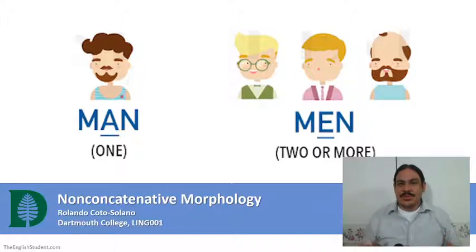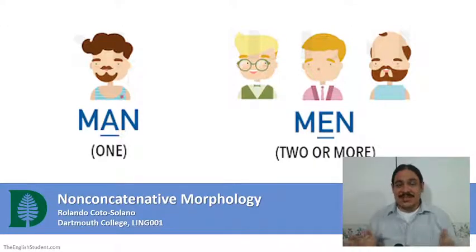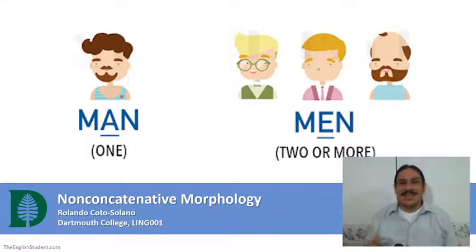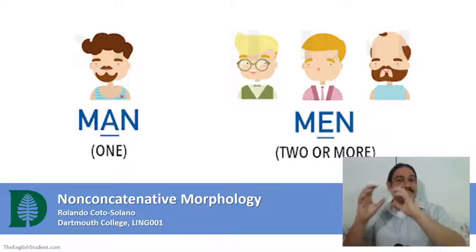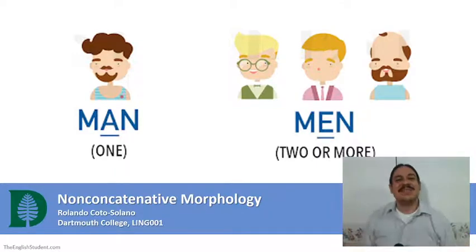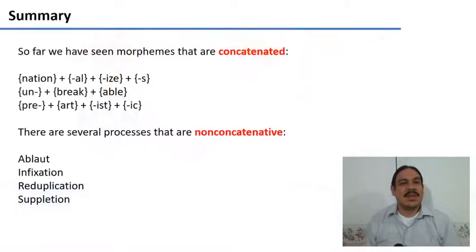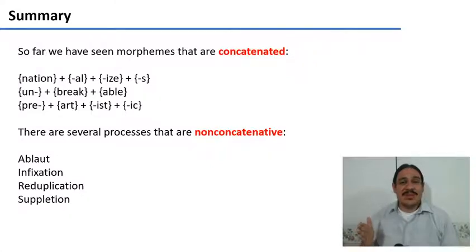In this video we're going to study a special type of morphological processes called non-concatenative morphology. They are the processes that turn a root like man into men. So far we have seen morphemes that are concatenated,